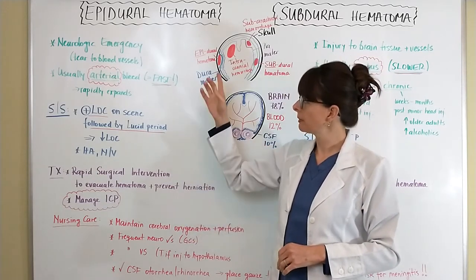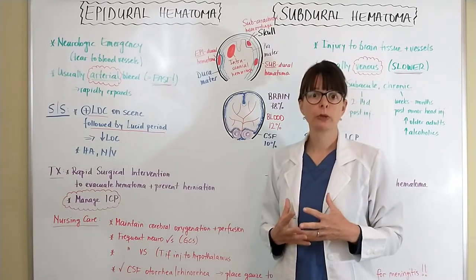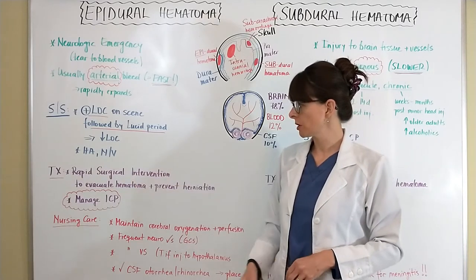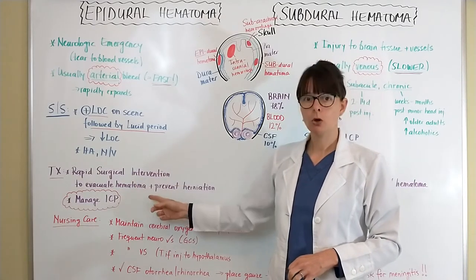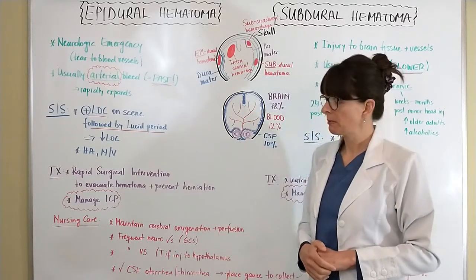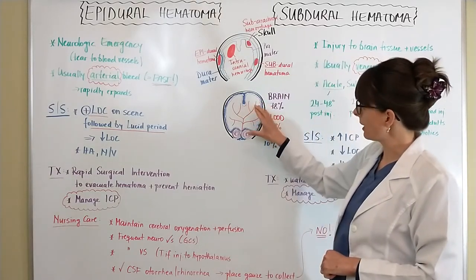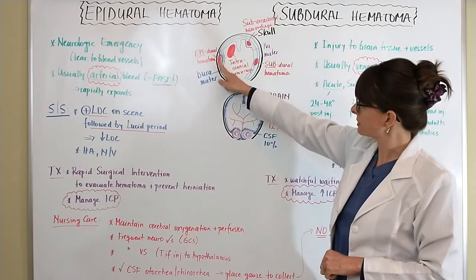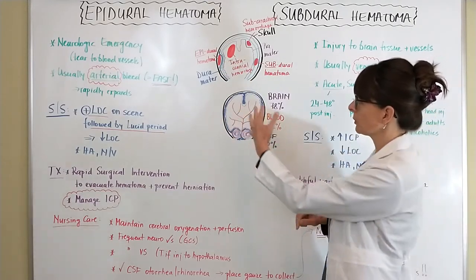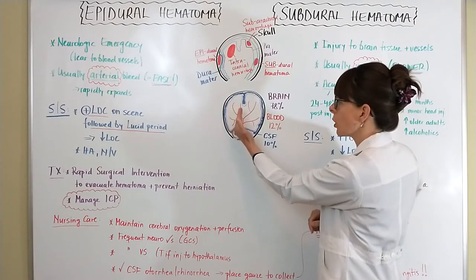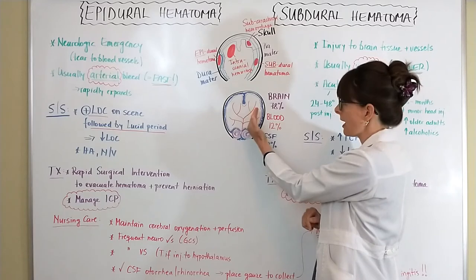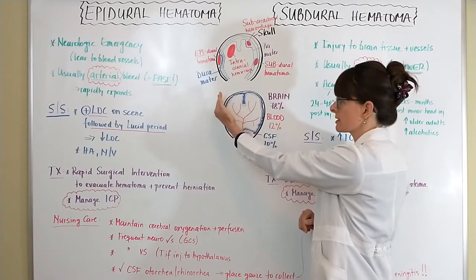Treatment for an epidural hematoma involves rapid surgical intervention to evacuate the hematoma and prevent herniation. Herniation occurs when the epidural hematoma — say on the left side — causes the brain to be pushed over toward the other side because the blood is taking up too much space.